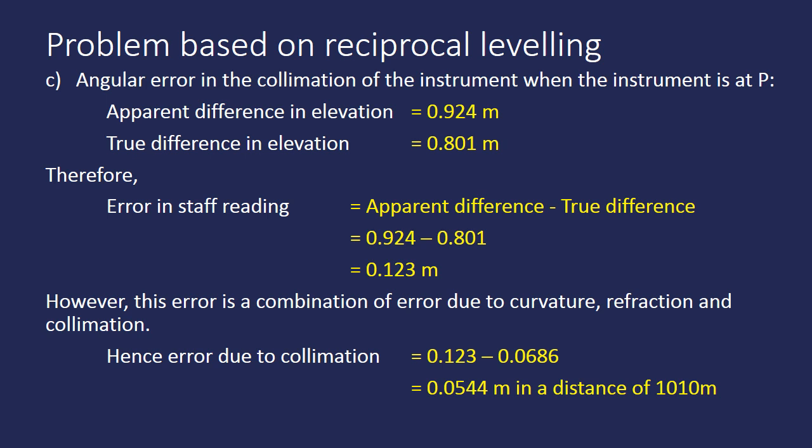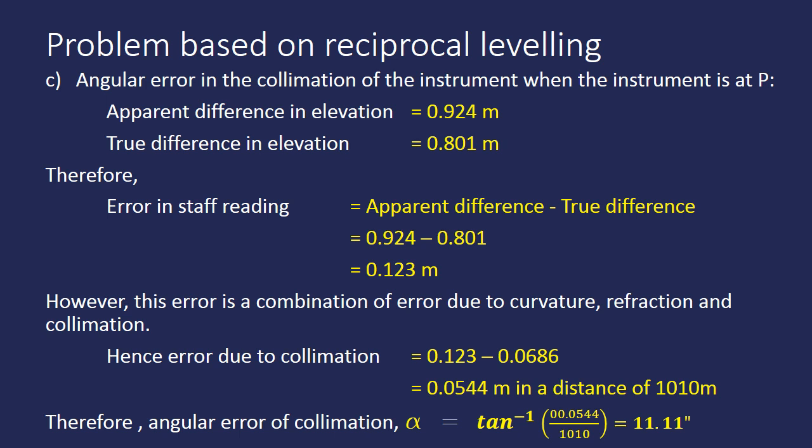This error of 0.0554 m occurs over a distance of 1010 m between stations P and Q. The angular error is given by alpha = tan⁻¹(0.0554 / 1010), which gives a value of 11.11 minutes. This is how we conduct reciprocal leveling and calculate the associated corrections and errors. Thank you everyone — see you in the next video.